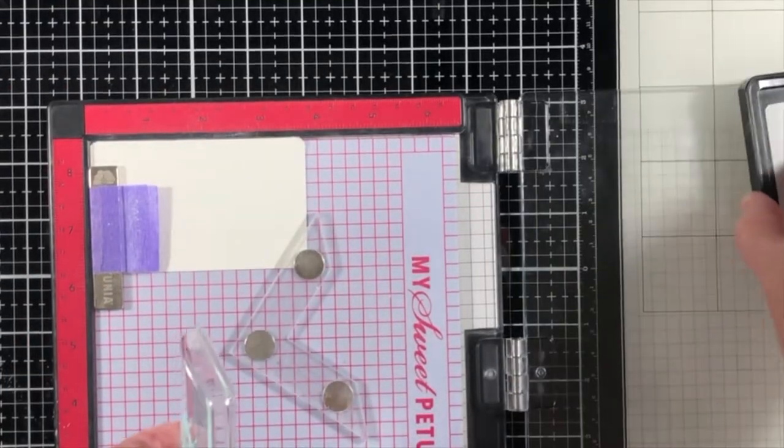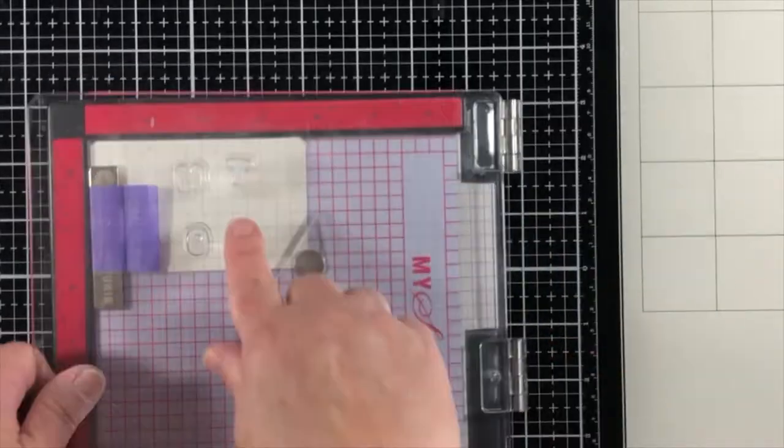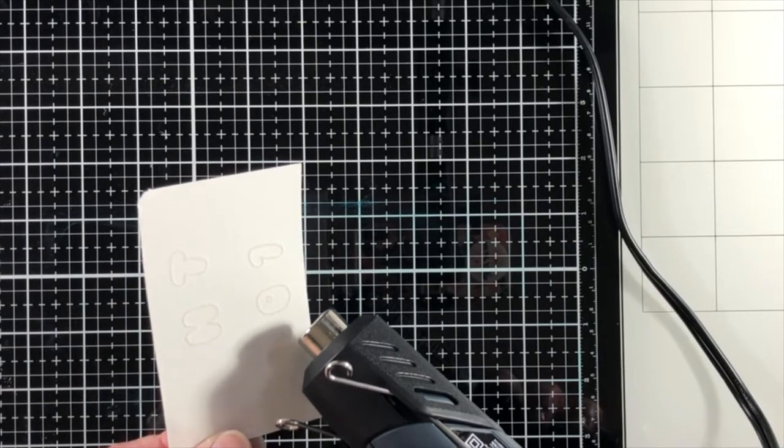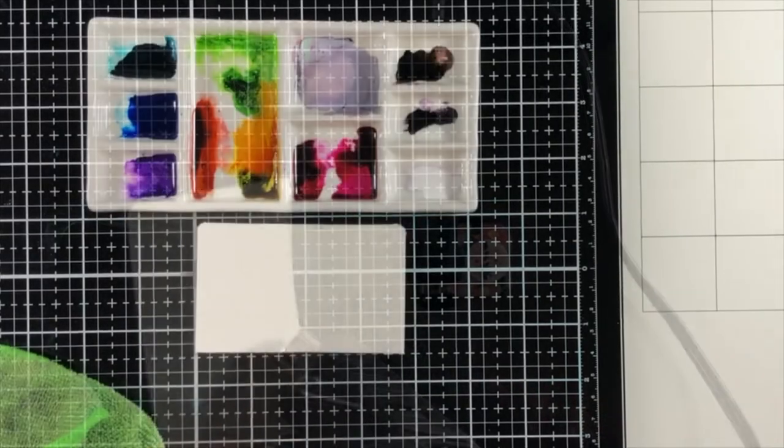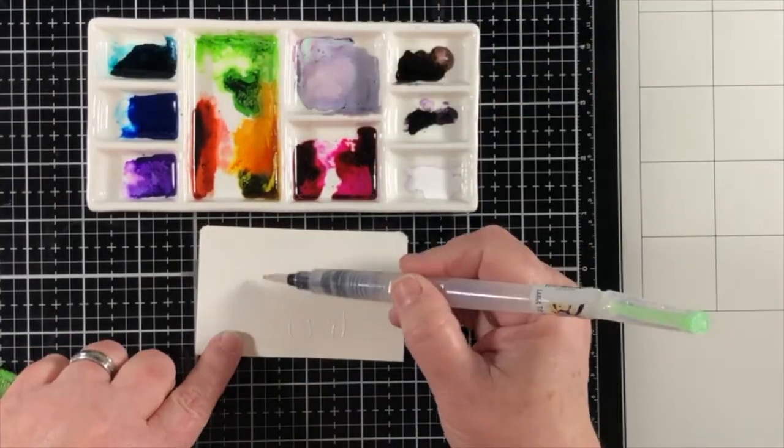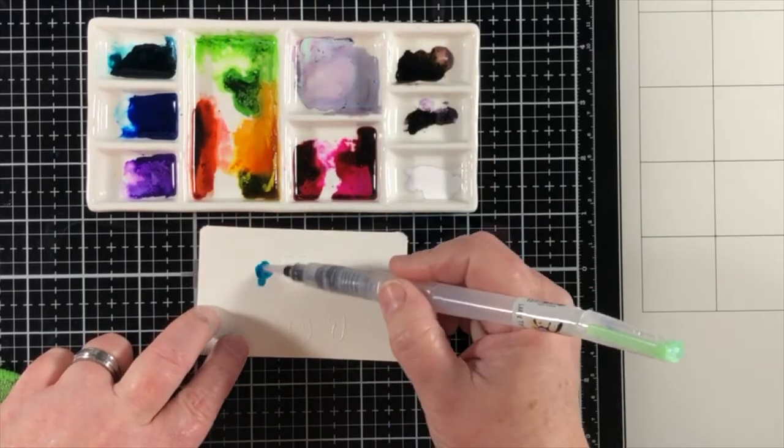So I had a scrap of watercolor paper. And I'm stamping down just like I did before with some of those letters. And I'm stamping on the smooth side. So be sure to pay attention to your projects and see which side is the smooth and which is the bumpy side of your watercolor paper.